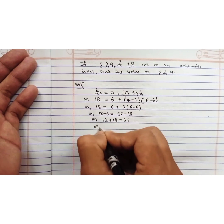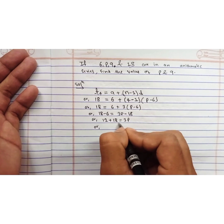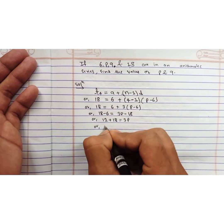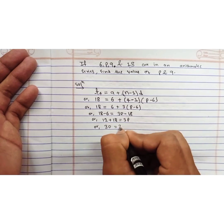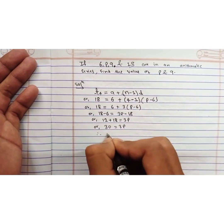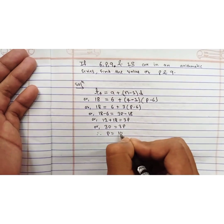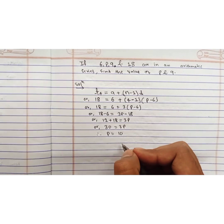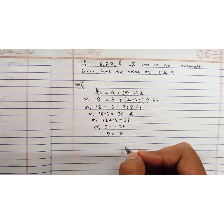Therefore, the value of p is 10. If we find the value of p is 10, we can easily find the common difference.